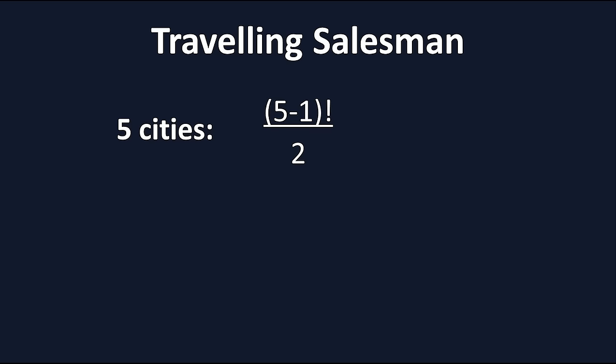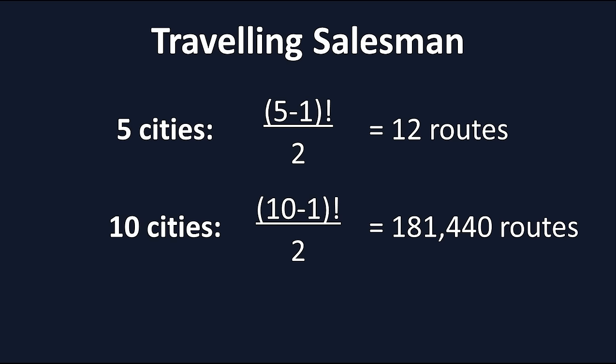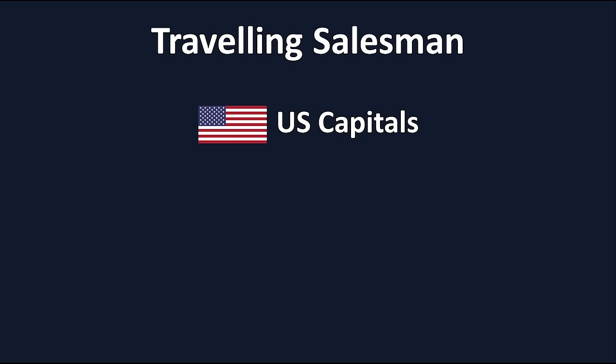If our salesman wanted to visit 5 cities, that gives us 12 possible routes. If our salesman wanted to visit twice the amount of cities, 10 cities, that gives us 181,440 possible routes. Just doubling our city number gives us an exponential growth in route possibilities. But still, 181,440 routes can be solved by a computer in mere milliseconds. Now, let's consider that the traveling salesman wants to visit every capital city in every U.S. state. As there are 50 U.S. states, that gives us 50 total cities.